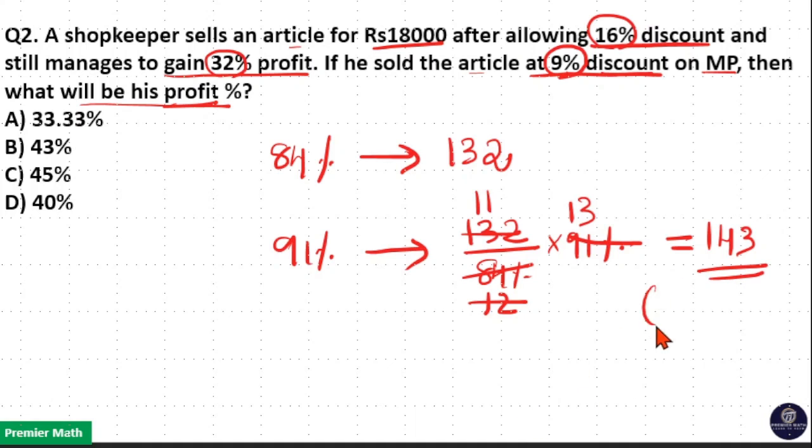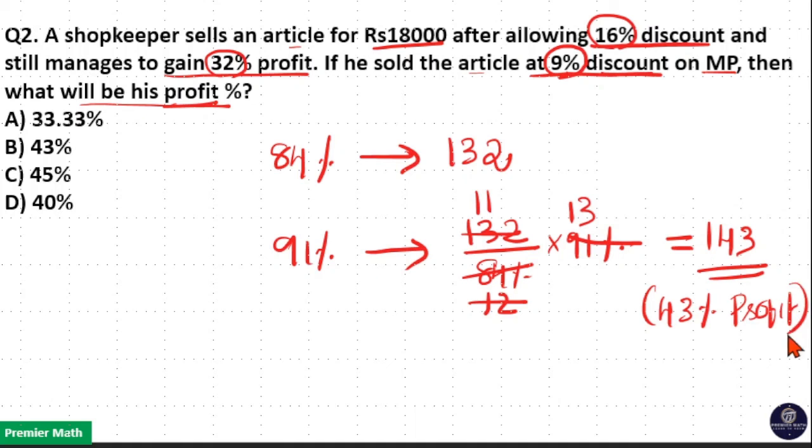143 means 43% profit. Option B is your answer.